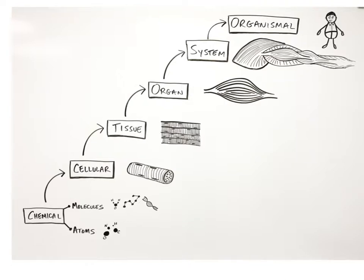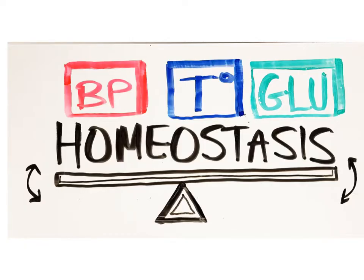Every level of the body's organization participates in this dynamic process in order to keep the body's internal environment within a normal range suitable for life. Some examples of body processes regulated through homeostasis include blood pressure, body temperature, and blood glucose level.